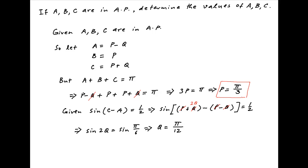This implies that Q is equal to π upon 12. Therefore we now have the values of P and Q and are therefore in a position to determine the angles A, B, and C.